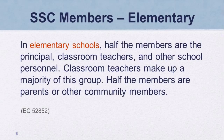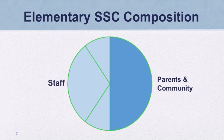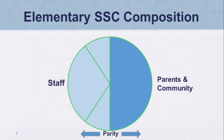For elementary schools, half the members are the principal, classroom teachers, and other school personnel. Of this half, classroom teachers must make up a majority of the group. The other half of the members must include parents and/or other community members. A key concept to keep in mind regarding SSC composition at the elementary level is parity — having an equal number of certain groups. There must be parity between the school staff and the parent and community groups. This model displays one half staff and one half parents and community members required for the elementary school site council.